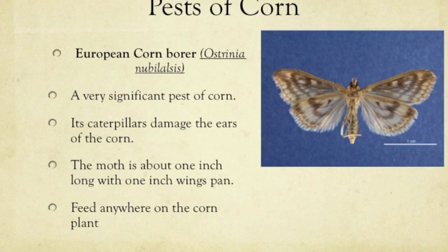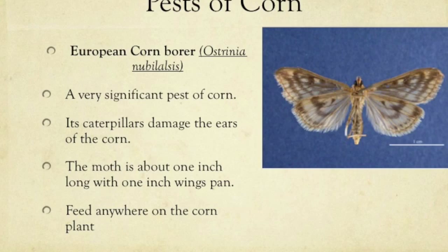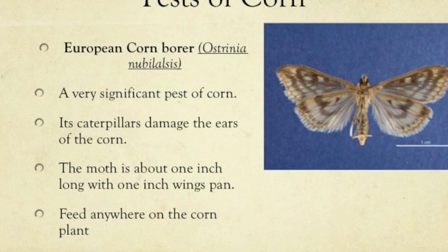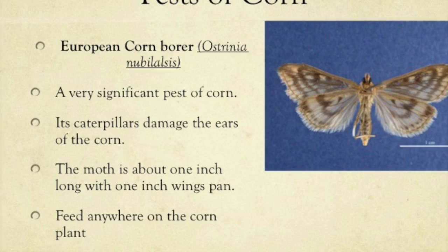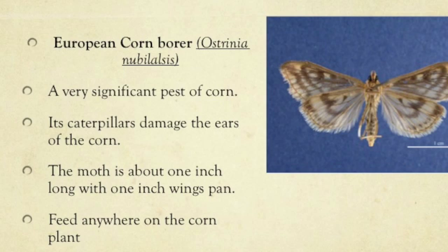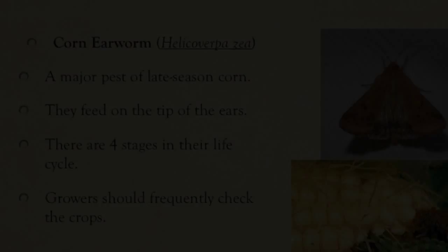Another pest of corn is the European corn borer. Historically, the European corn borer has been a very significant pest of field corn. Over the past years, their population has dropped significantly. The cause is unknown but may be due to the use of biologically engineered varieties — the BT hybrids — which are very effective for controlling this pest species. Its caterpillars damage the ears of the corn as well as the stalks by boring tunnels, which cause the plants to fall over. The corn borer is described as 1 inch long with a 1 inch wingspan. The female is light yellowish brown with dark irregular wavy bands across the wings, while the male is slightly smaller and darker in coloration.